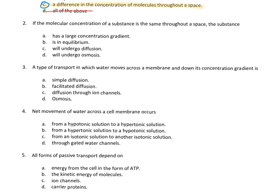If the molecular concentration of a substance is the same throughout the space, the substance is at equilibrium — B. That's right. That's just that simple. Has a large concentration gradient? No. If you answered that, you don't understand what a concentration gradient is. A concentration gradient goes from high to low. So if the molecular concentration of a substance is the same throughout, there is no gradient.